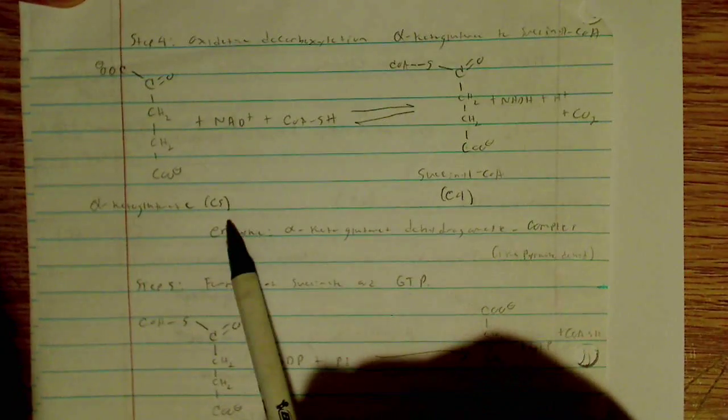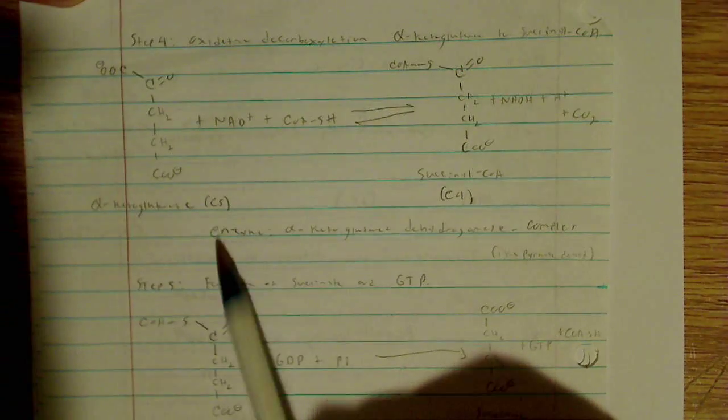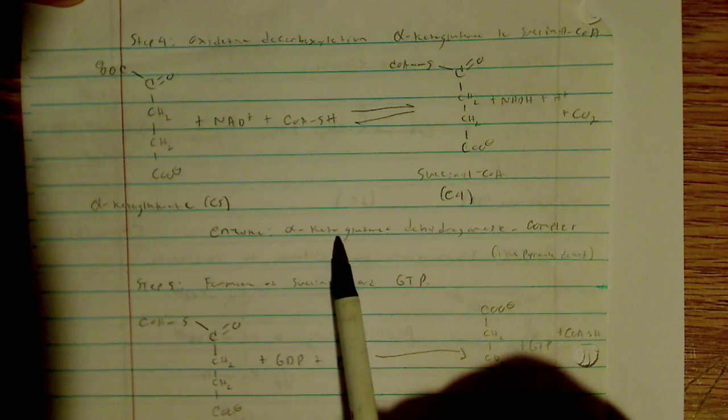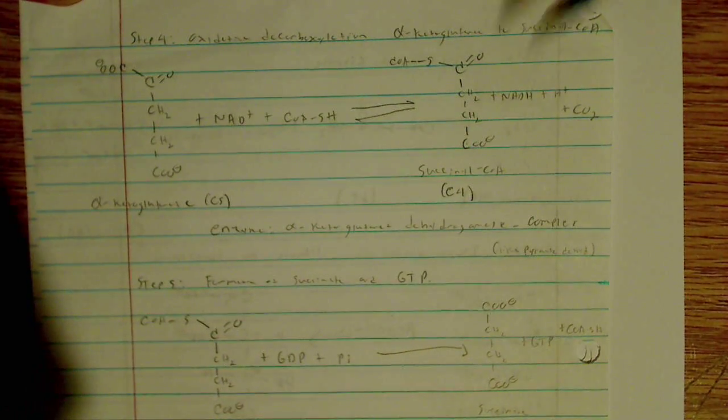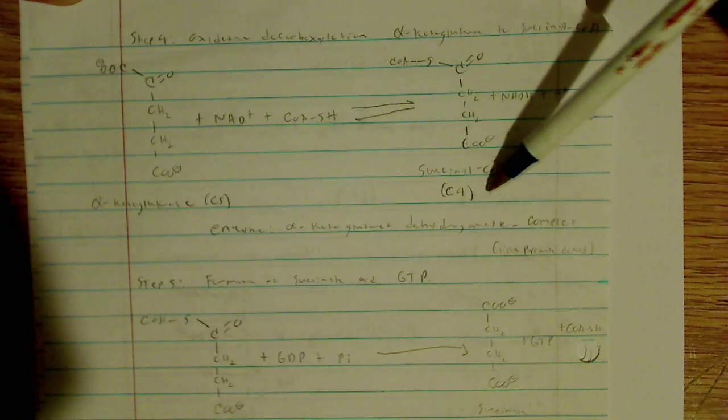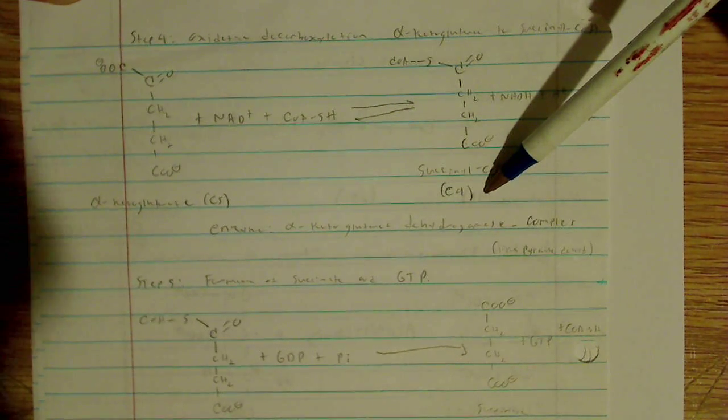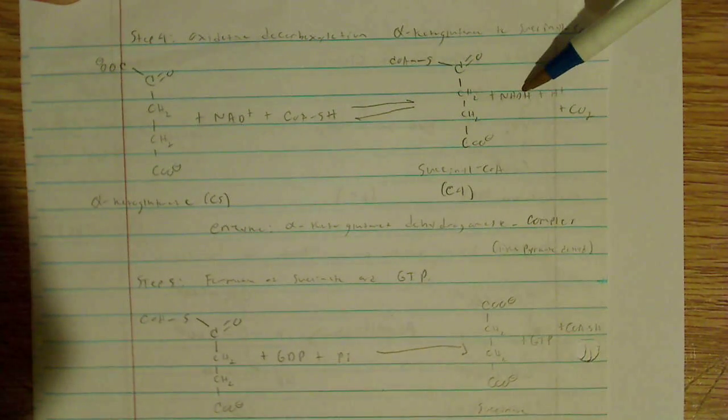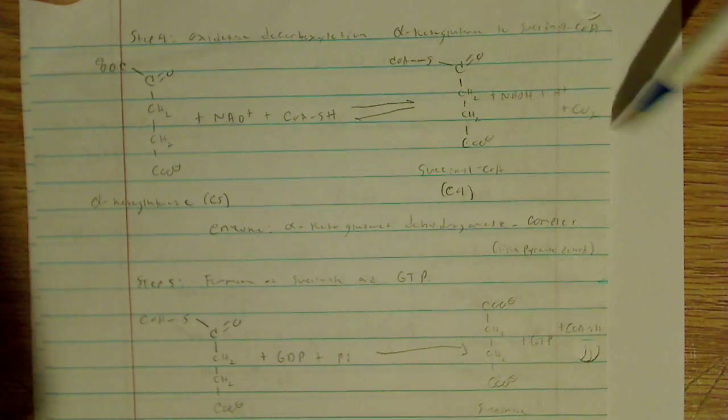So I'm starting with the five-carbon alpha-ketoglutarate, and I have the enzyme alpha-ketoglutarate dehydrogenase complex. I'm forming succinyl-CoA, which is now a four-carbon molecule because I'm losing a carbon again. I'm reducing NAD+ to NADH, releasing H+ and CO2.